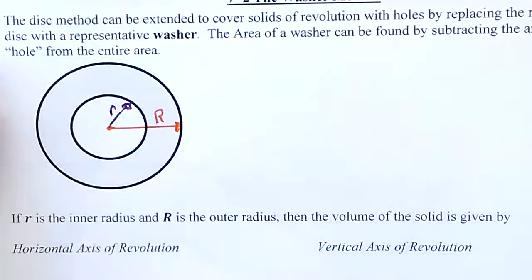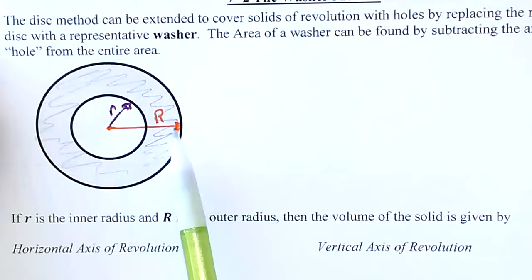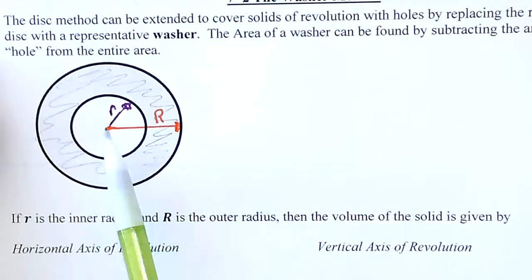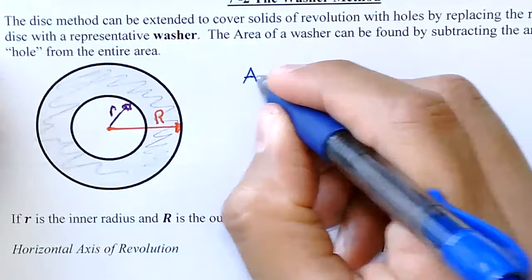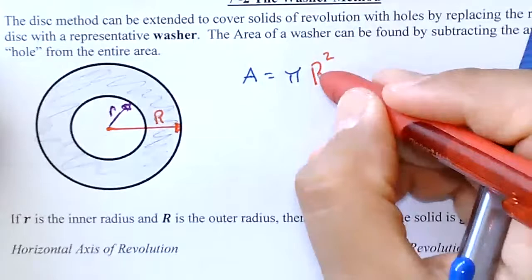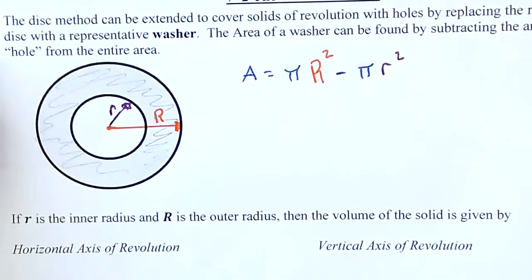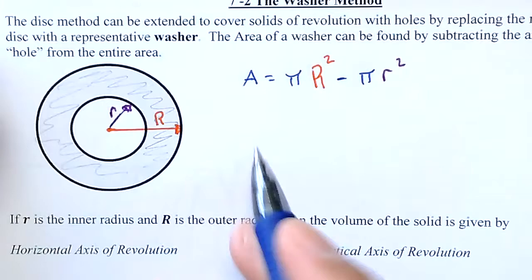So if we want to find the area of the shaded region, I get the area of the whole thing, pi R squared, minus the area of the hole, pi r squared. So the area of this washer is pi R squared — that's the radius of the large circle — minus pi r squared, which is the area of the small circle. This gives me the area of the shaded region.